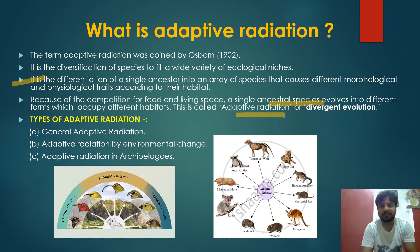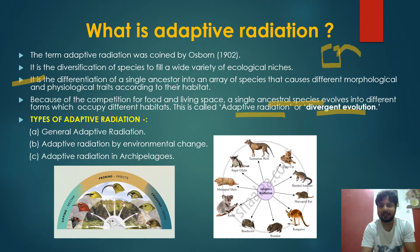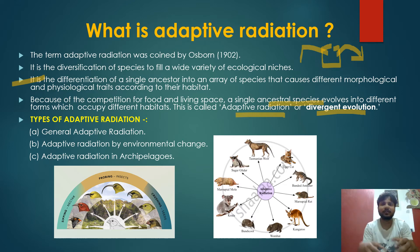Because of competition for food and living space, a single ancestral species evolves into different forms which occupy different habitats. This is called adaptive radiation or divergent evolution. The single ancestral species, due to competition, migrates to different ecosystems and occupies different niches, leading to morphological and physiological adaptations and eventually speciation.